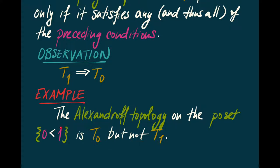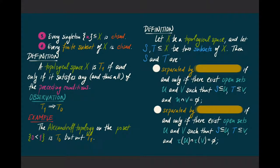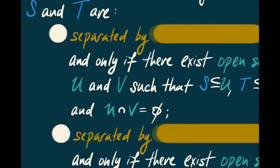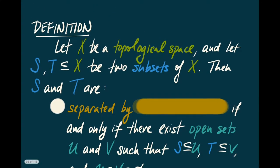The open neighborhoods of 0: there's only one of them. But the open neighborhoods of 1 — 1 itself is open and the whole space is open — so there are two open neighborhoods of 1 and only one open neighborhood of 0. With that in place, we're now going to look at the rest of the separation axioms, and there's a whole pile of them. It's convenient to have some language to describe these things.